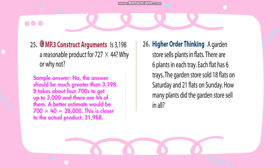Is 3,198 a reasonable product of 724 times 44? The answer is no. Because the answer should be much greater than 3,198. It takes about 700 groups of 44, so a better estimate would be 700 times 40. 724 becomes 700 and 44 becomes 40, so the estimated answer is 28,000. This is closer to the actual product, which is 31,988.